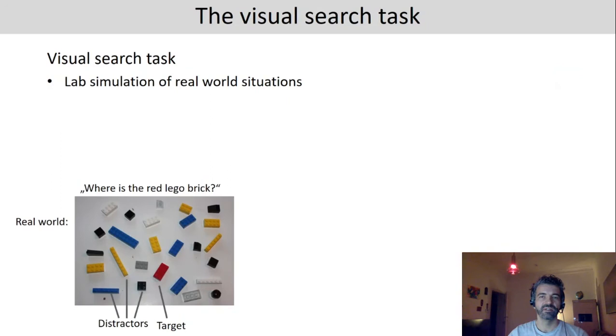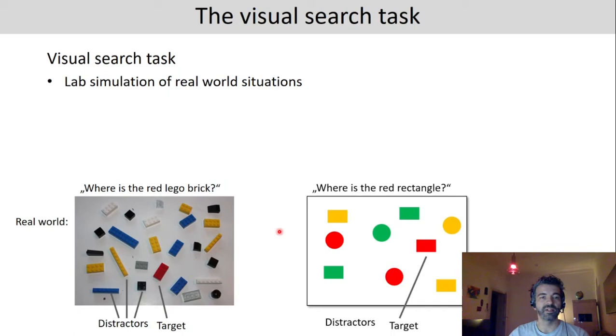So the visual search task is a lab simulation of real world situations. But because we're in the lab we want to control all properties of our task. So instead of in the real world where we would ask where's the red lego brick, in the lab we would have an abstract version of that where the target for example is a red rectangle and all the other geometric shapes here are the distractors.